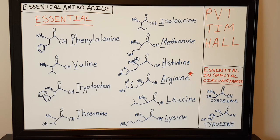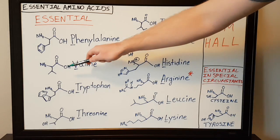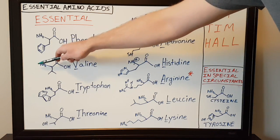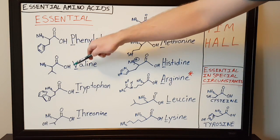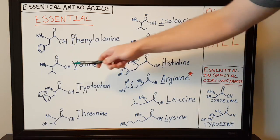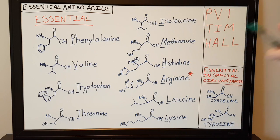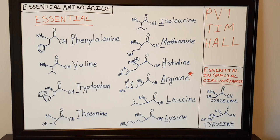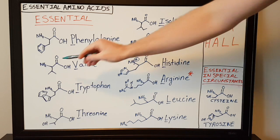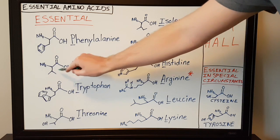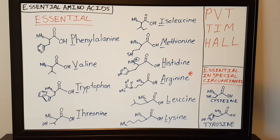The next amino acid is valine. Valine is your typical amino acid backbone with a branched side chain. Valine is one of the branched chain amino acids, and its branched side chain is in the form of a V — so it's kind of an easy way to remember that.